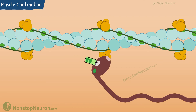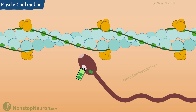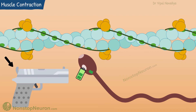If ATP is available, the head takes a cocked position in which it is ready to bind with actin and pull it as soon as the binding site is exposed next time. It is like cocking a gun to make it ready to fire.